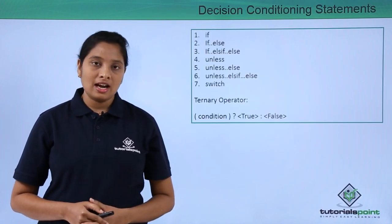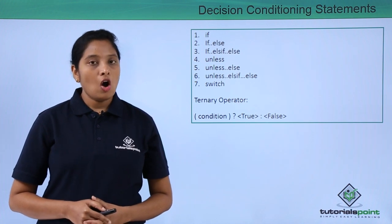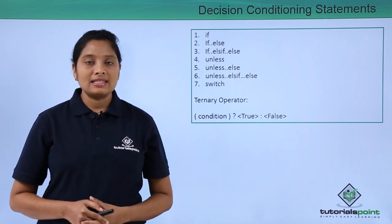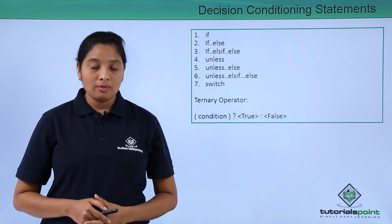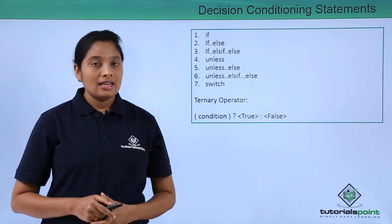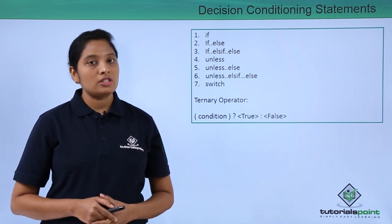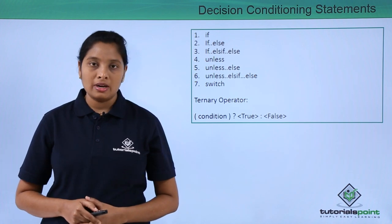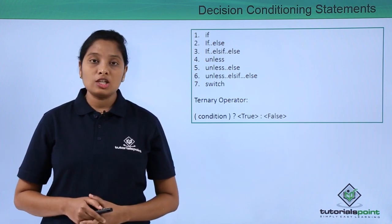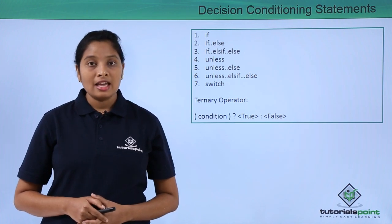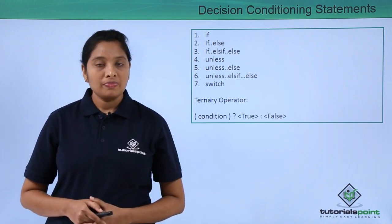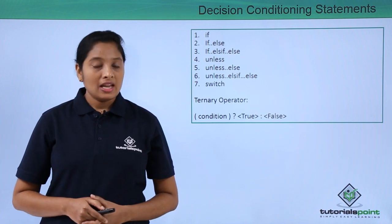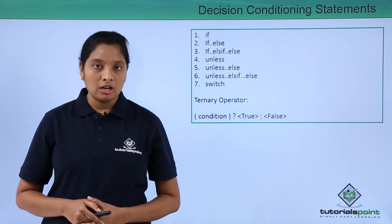There are 7 decision conditioning statements in Perl, all acting the same as in C or Java, except that there is one more statement called unless. This behaves exactly opposite to the if statement. The if statement executes when the condition is true, while unless executes when the condition is false. Like in C or Java, there is a ternary operator in Perl too.